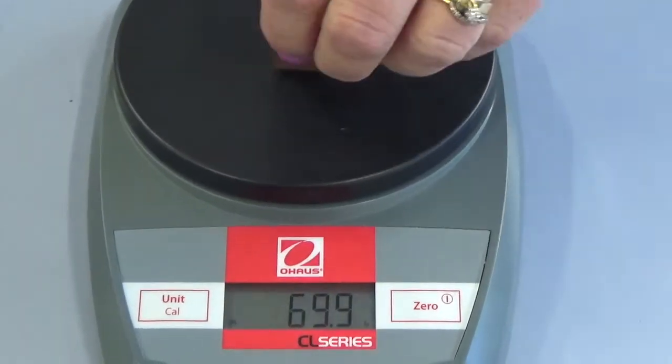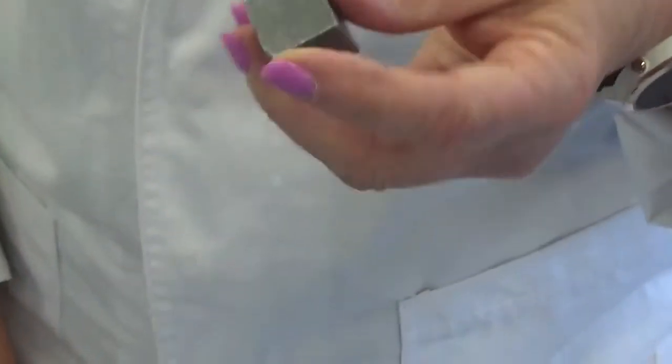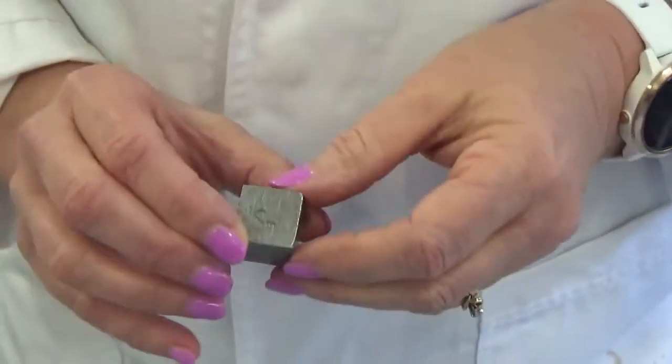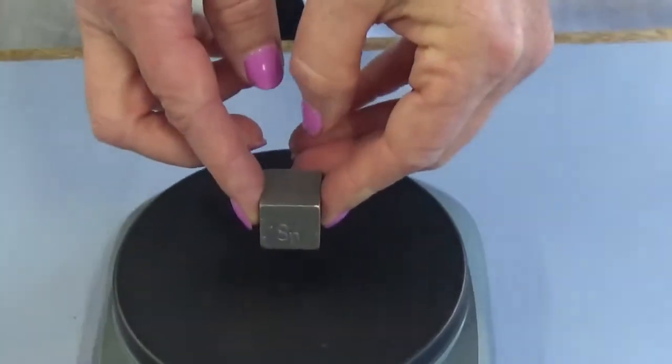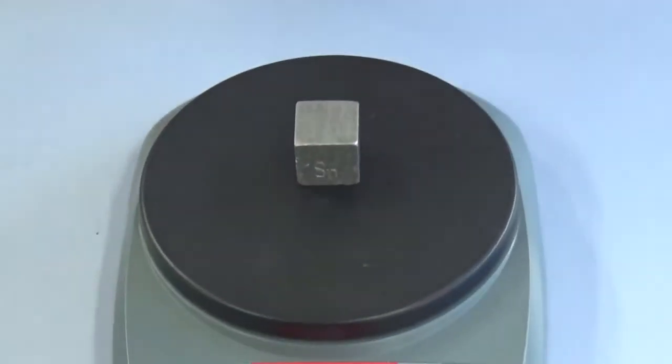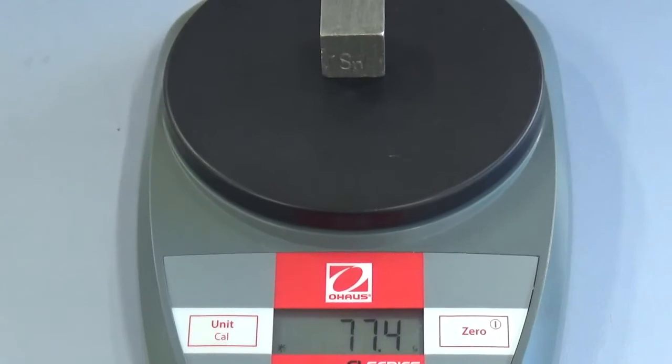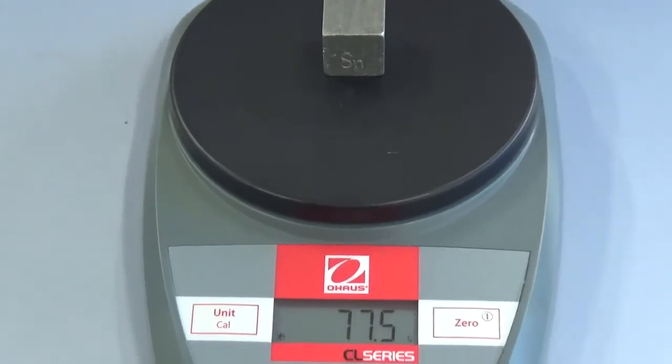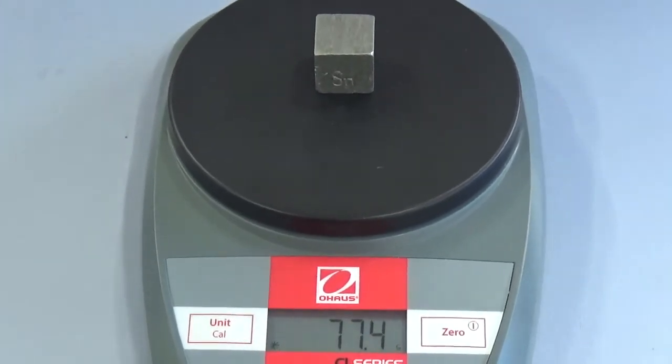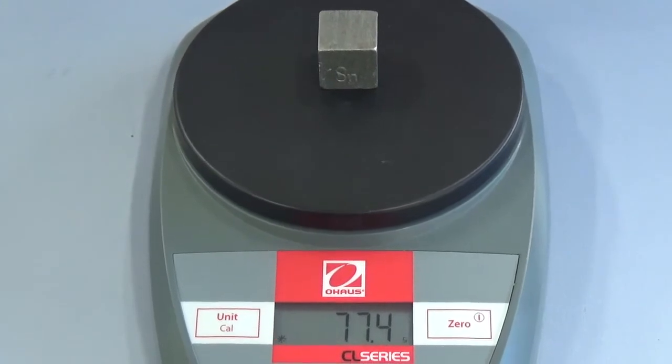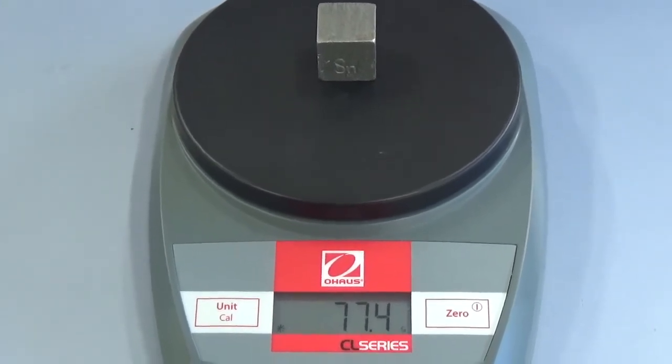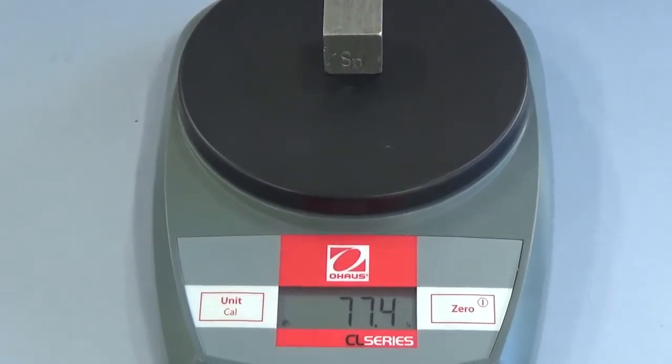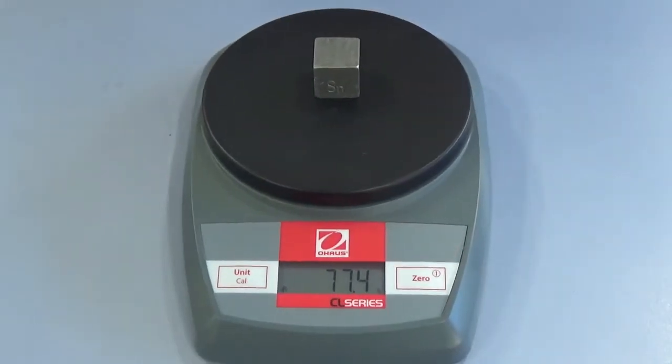Okay, let's do another one. Here we have tin. So putting tin on the balance, 77.4 grams. So the tin is heavier than the copper, even though they're exactly the same size. Why is that? Because tin has a higher density than copper does.